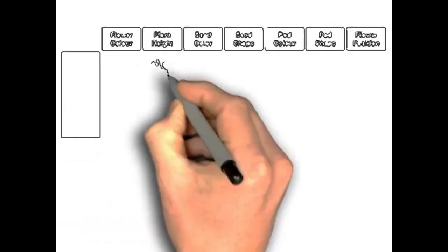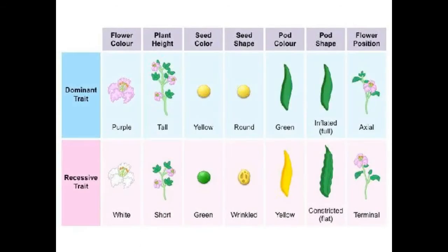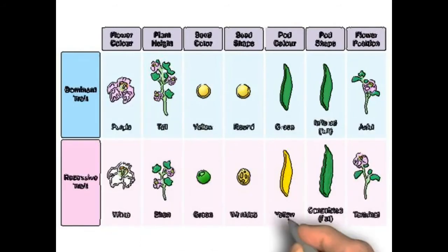Mendel took varieties of pea plants showing seven pairs of contrasting features, as shown in figure 3.6 on page number 30. He crossed pure breeding varieties first by taking only one feature at a time — that is called a monohybrid cross — and by taking two features together, that is called a dihybrid cross. He tried with all seven features and his observations were similar for all. For example, the dominant character for flower colour is purple while the recessive trait is white; for seed colour, the dominant is yellow and the recessive is green.